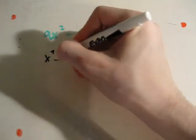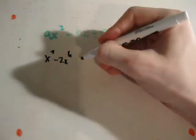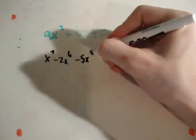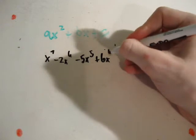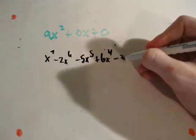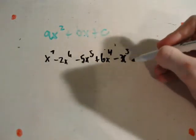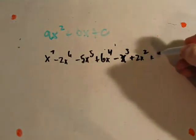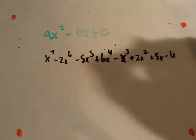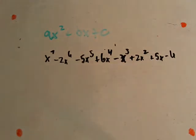x to the 7th minus 2x to the 6th minus 5x to the 5th plus 6x to the 4th minus x to the 3rd plus 2x squared plus 5x minus 6. That is a very long problem, and if you want to do the long division it'll work. Go ahead and do it if you want, but this is going to shorten this up so much more.